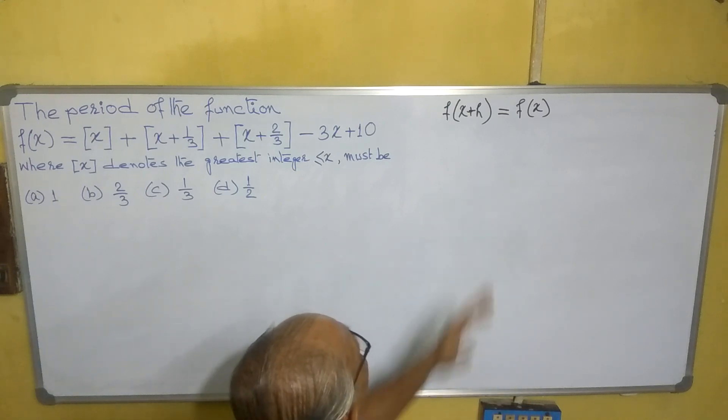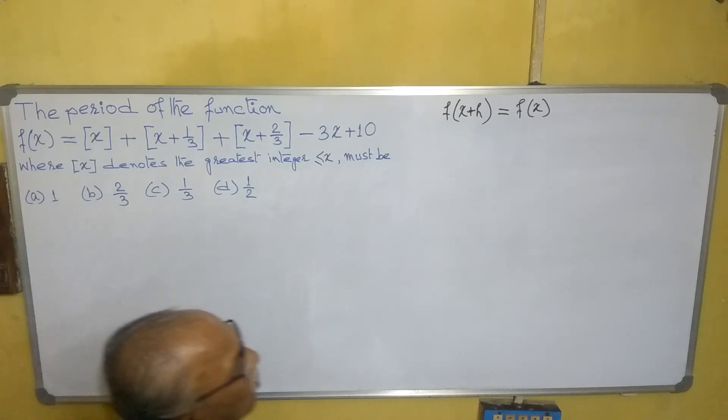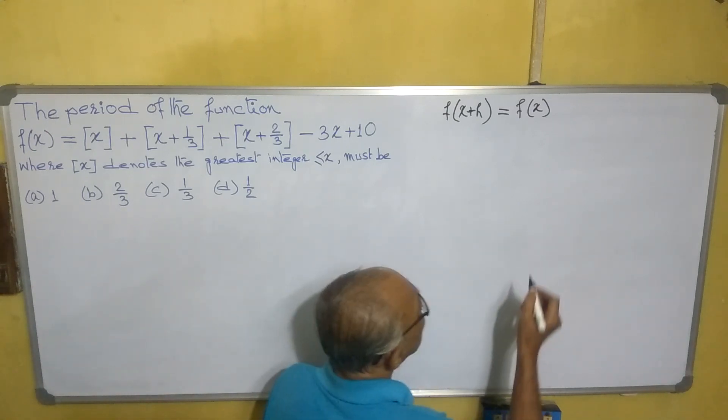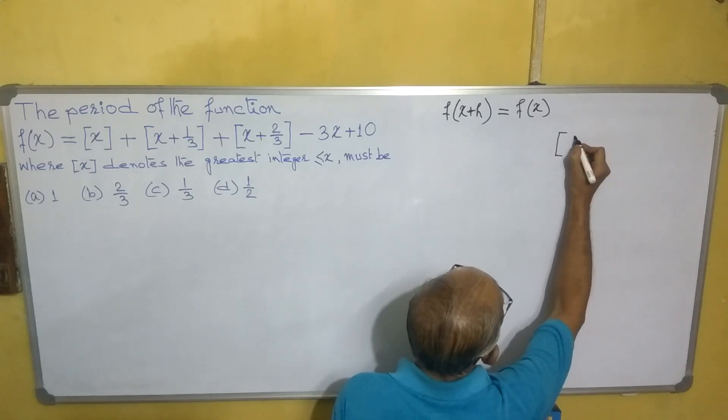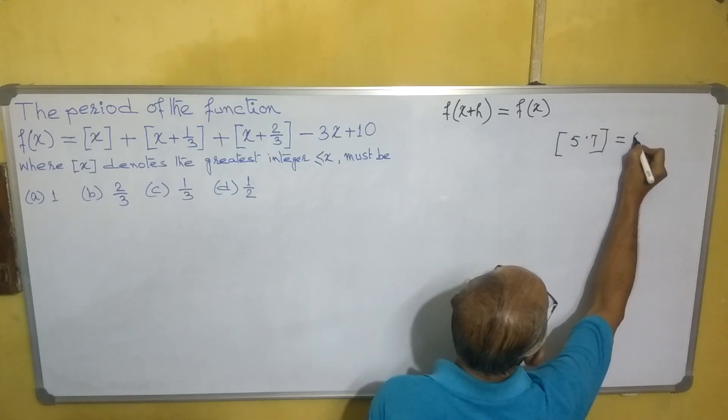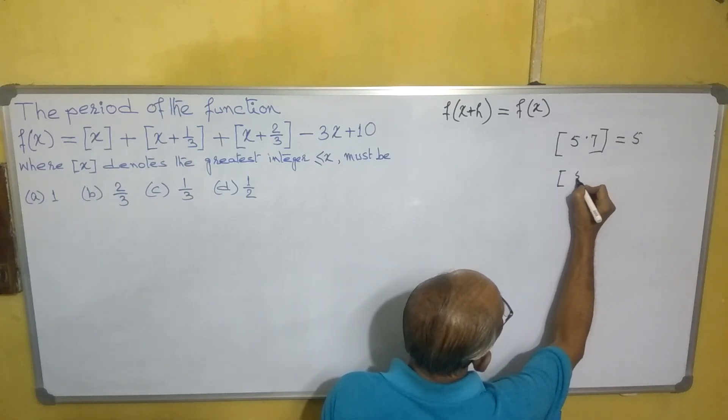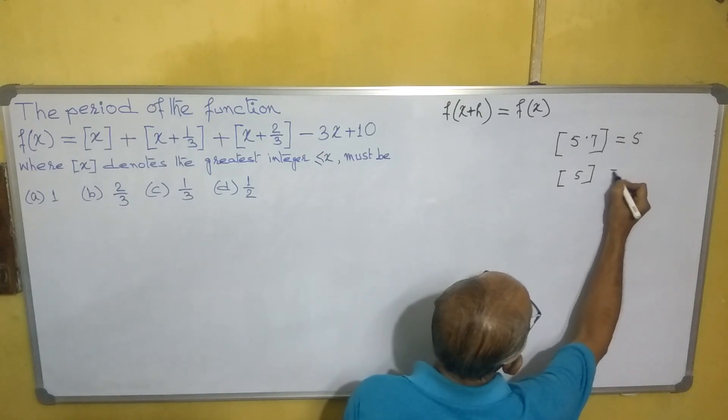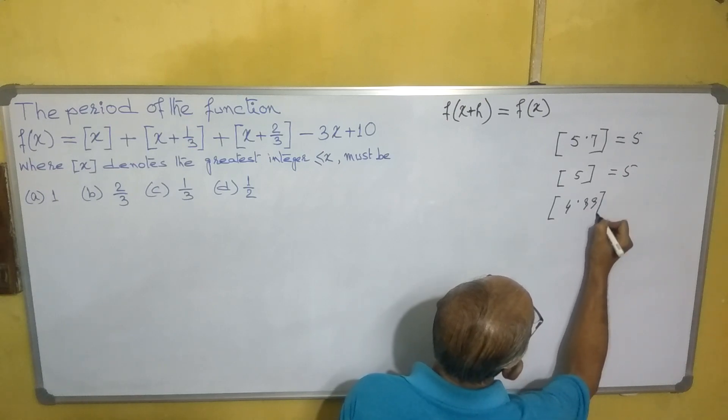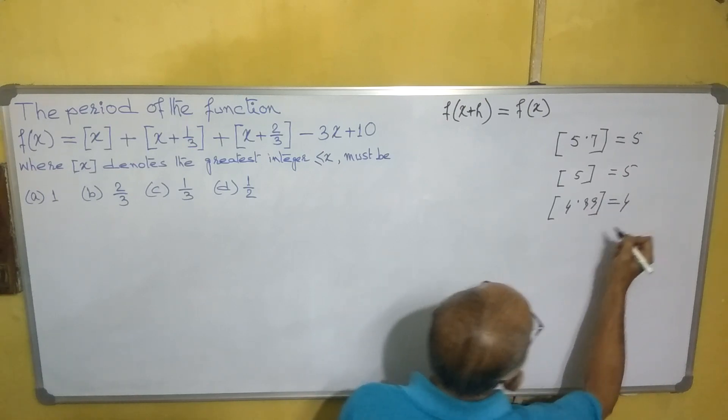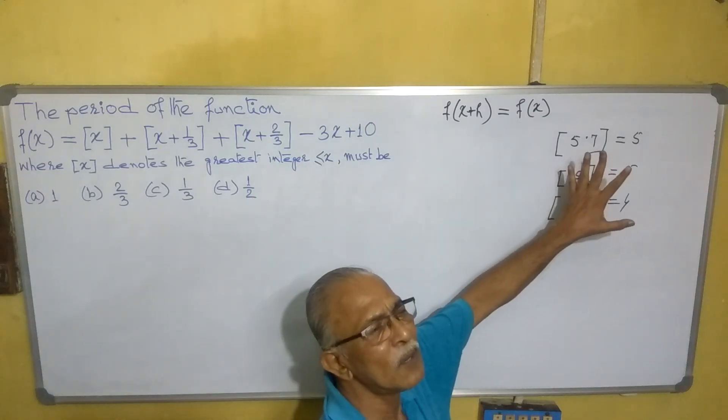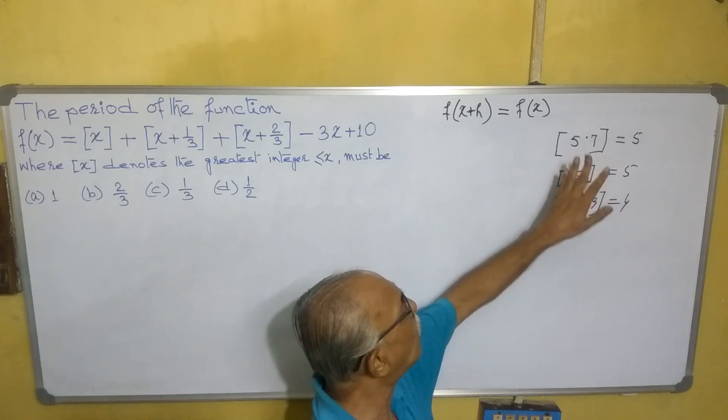So this is called a periodic function. Now what is the box function? It is the greatest integer in x, not greater than x. That means [5.7] = 5, [5] = 5, [4.99] = 4. That is the greatest integer in x, not greater than x. In this way you have to see the box functions.